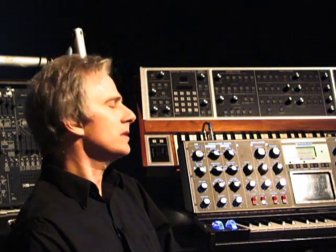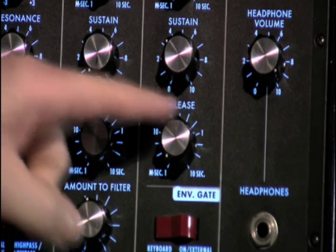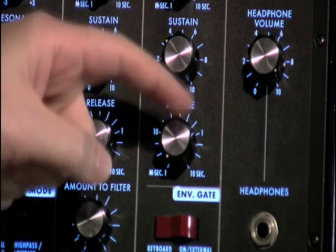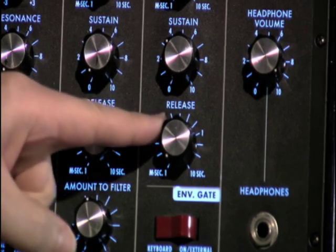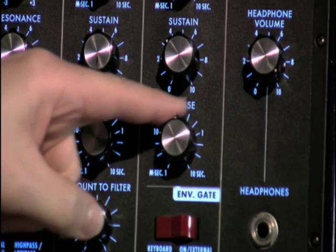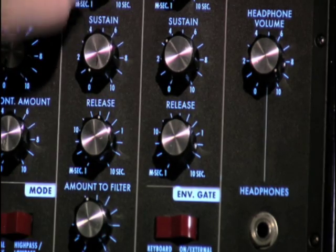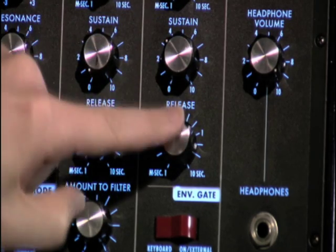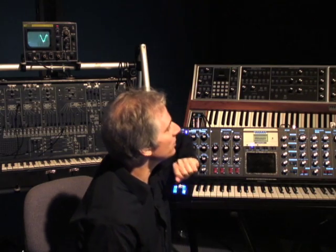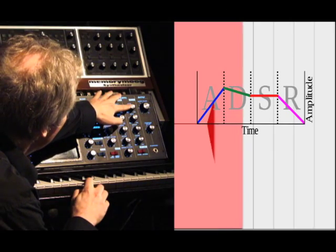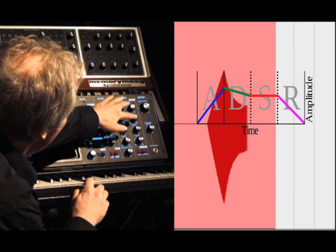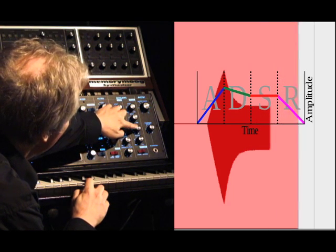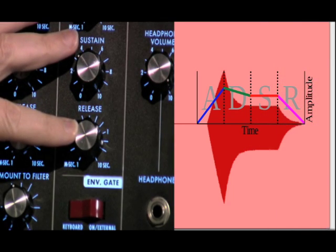Let's listen to this on the Moog Voyager. Notice over here, at the very bottom of my envelope, I have the release knob. I'm going to bring this up to about two seconds. So after the sound has gone through all these stages and I release the key, it will take approximately two seconds for loudness to return back to zero.